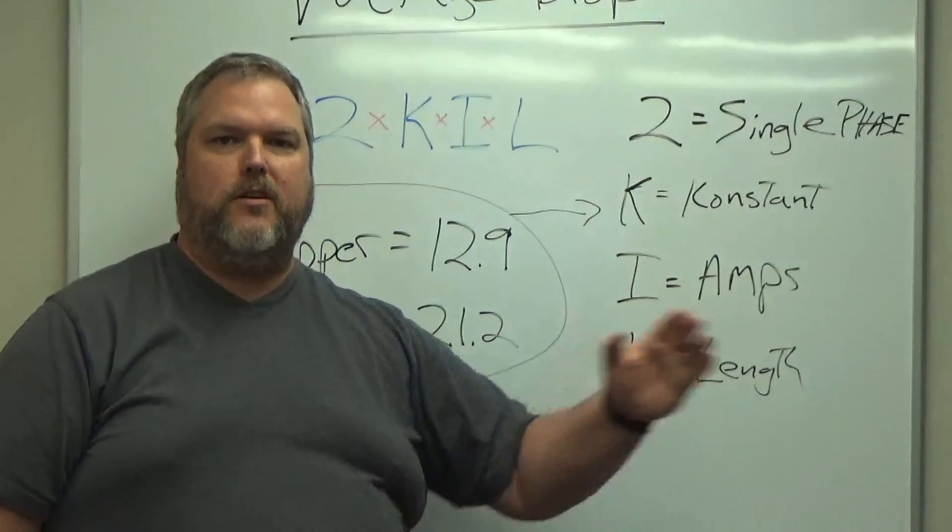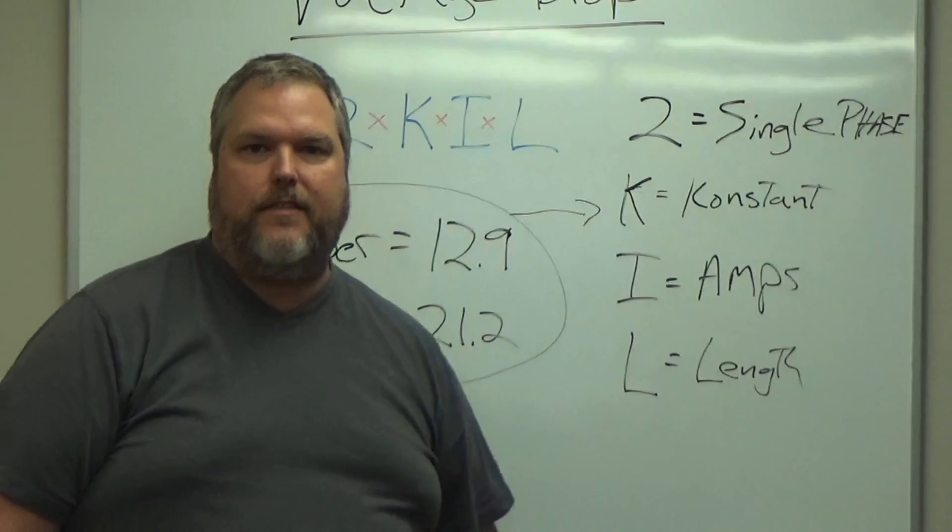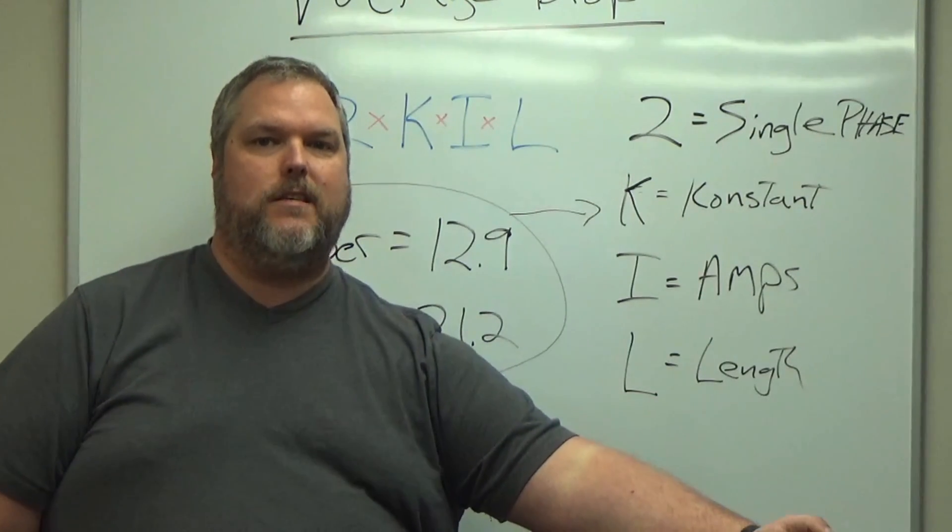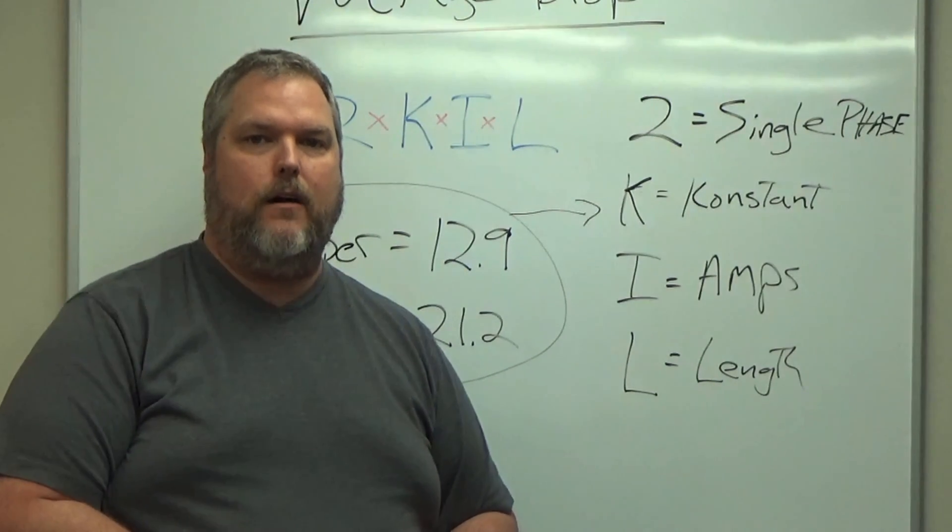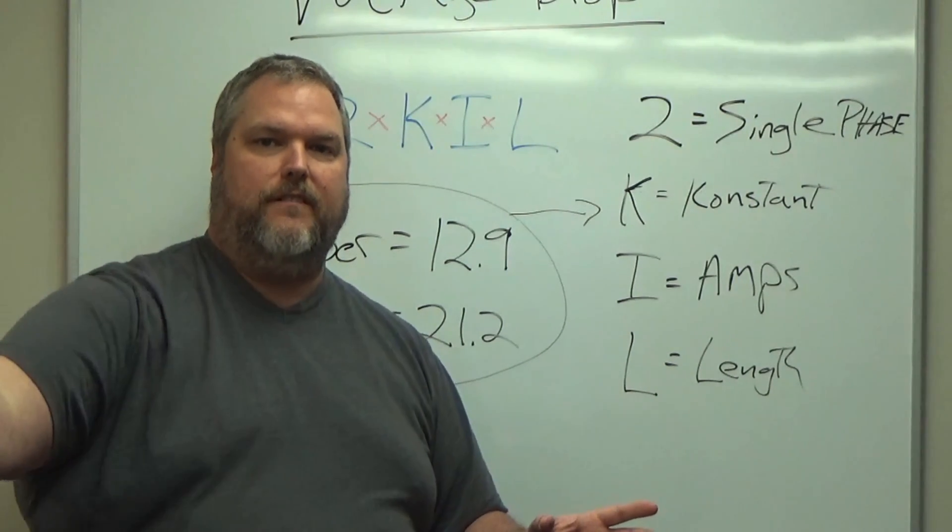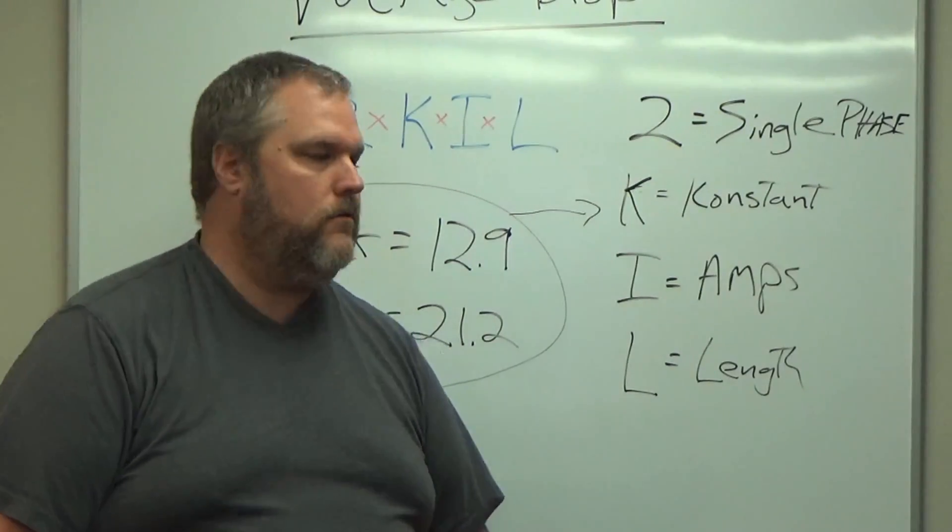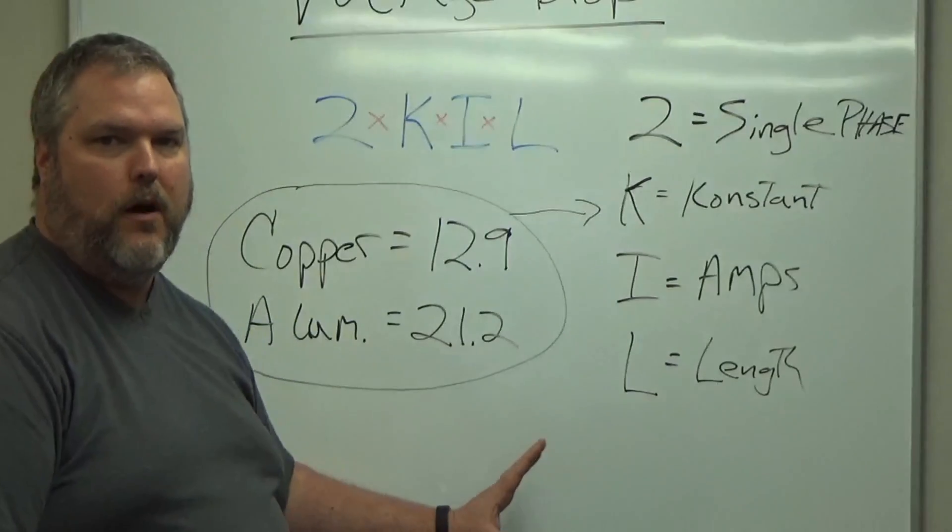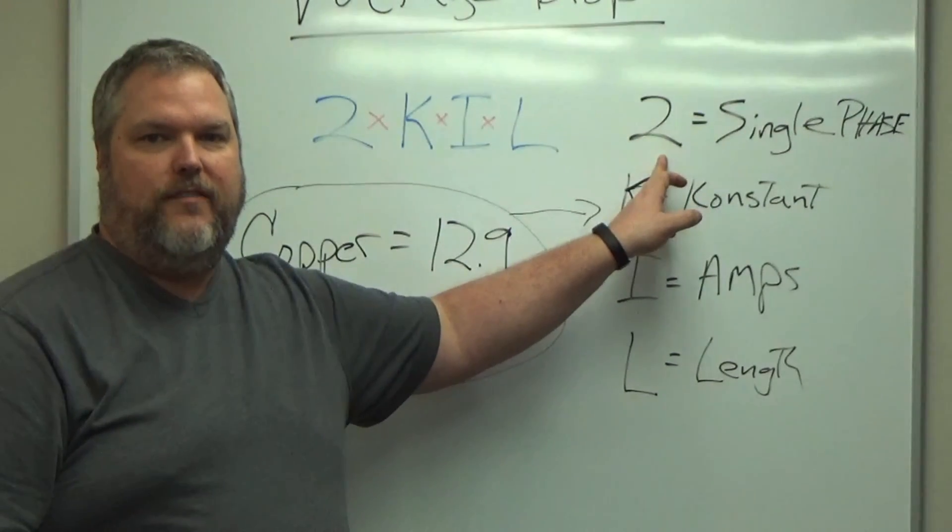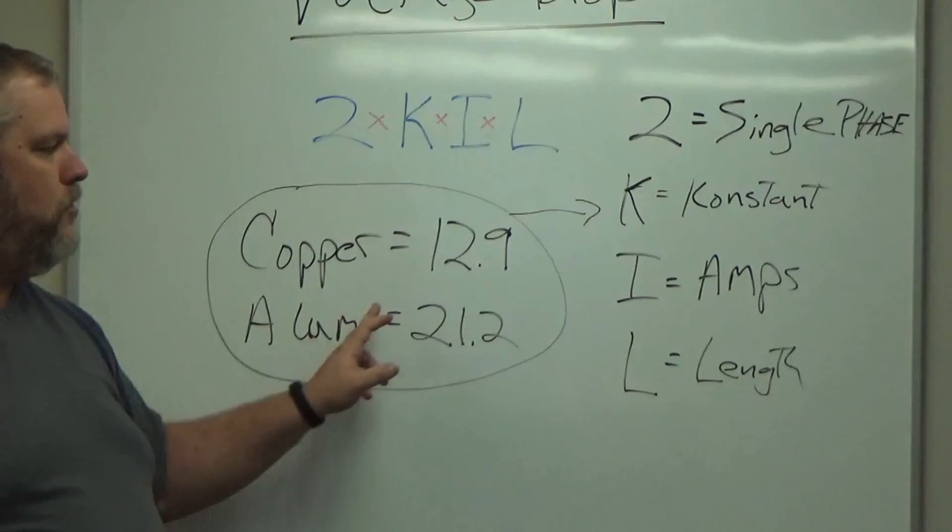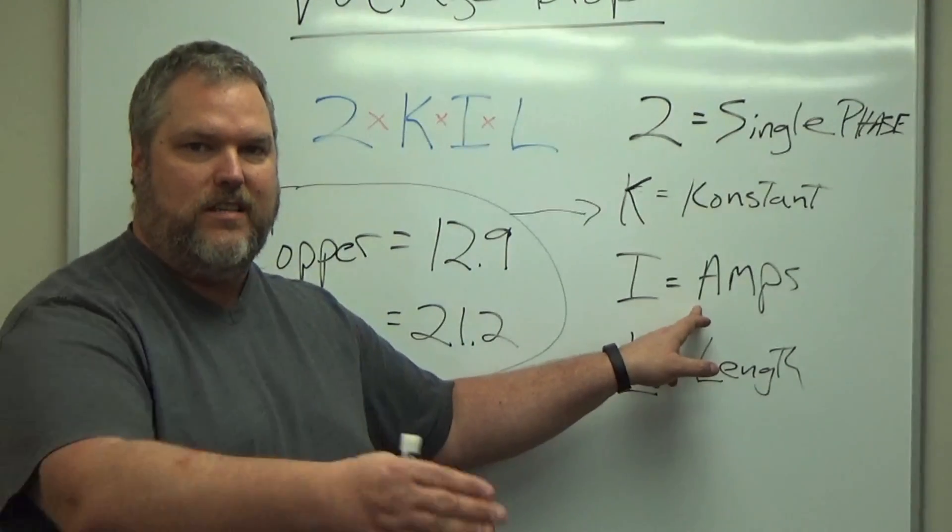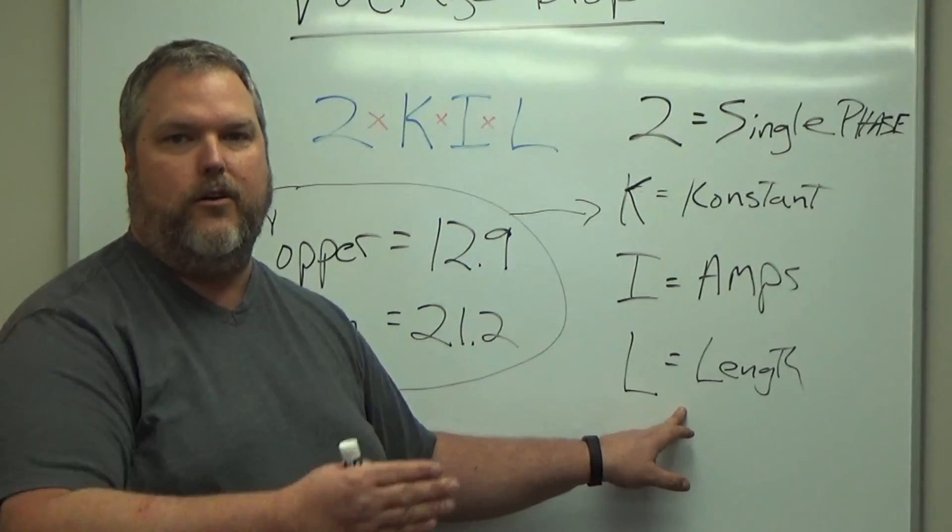Now, the amps are going to be what we need. The length is going to be from the breaker that's feeding this location to its end location. So if I have a panel in a main house and I've got to run to another panel in a shed, it's from where I'm going to feed that breaker to feed the shed. We're going to use a shed as an example. We know that 2 stands for single phase, K stands for the constant for copper or aluminum wire, and these are the two numbers we're going to use. Amps is going to be the amperage we're trying to receive at that location, and the length is how far from breaker to breaker we're going to be going.